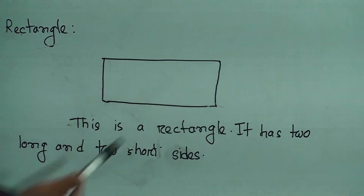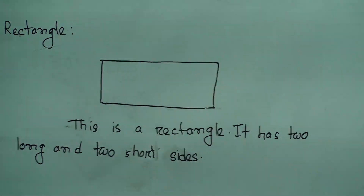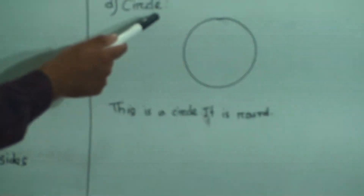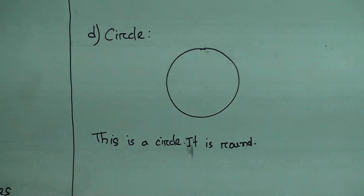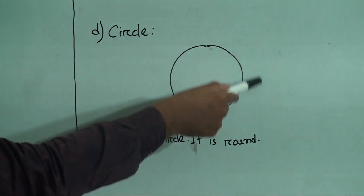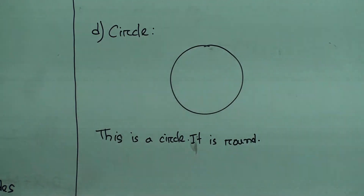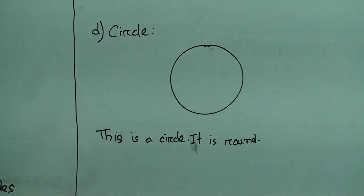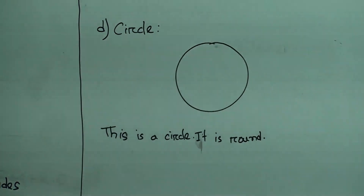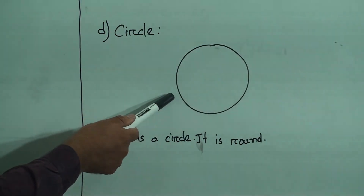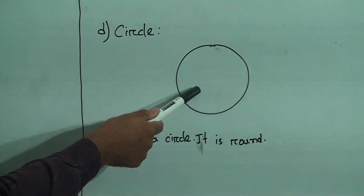Now the next one and the last one is circle. Look, this shape is called circle. It is round, so this is a circle. My dear students, you can use any cork of your water bottle to draw the circle.